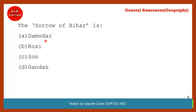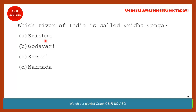Which river is called the 'Sorrow of Bihar'? Kosi is the correct answer. Kosi is also known as the Sorrow of Bihar because it causes frequent and extensive flooding due to its highly increasing water level every year.